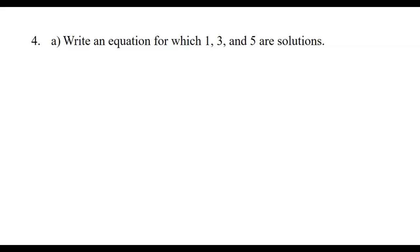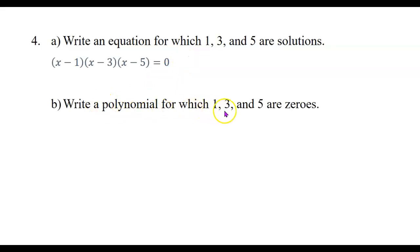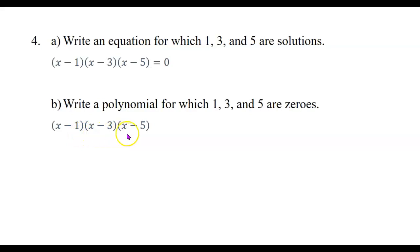Write an equation for which 1, 3, and 5 are solutions. How about this: (x minus 1)(x minus 3)(x minus 5) = 0. If you plug in 1 for x, you get 0 times the rest, which equals 0. Same for plugging in 3 or 5. For each solution, we have a corresponding factor. This is essentially the same as writing a polynomial for which 1, 3, and 5 are zeros. In factored form, the polynomial is (x minus 1)(x minus 3)(x minus 5).